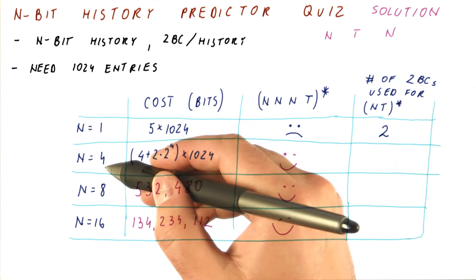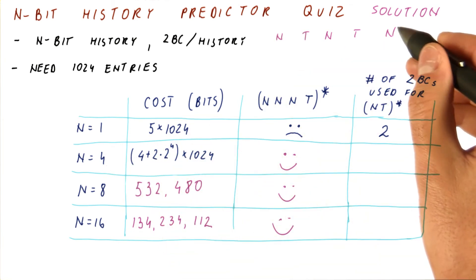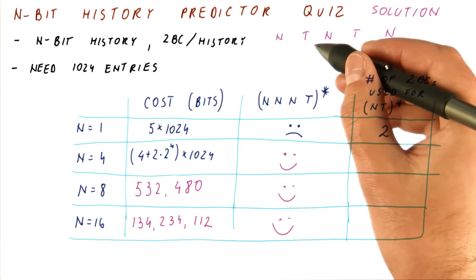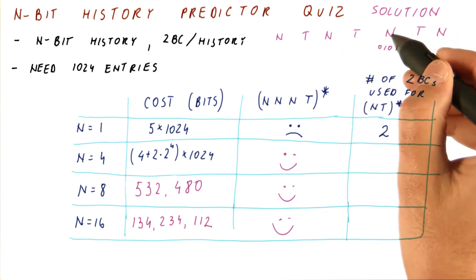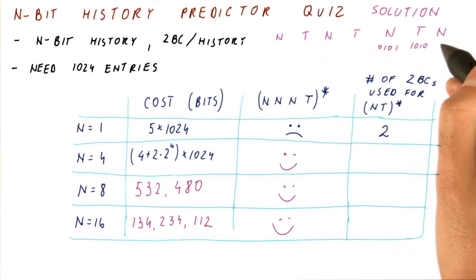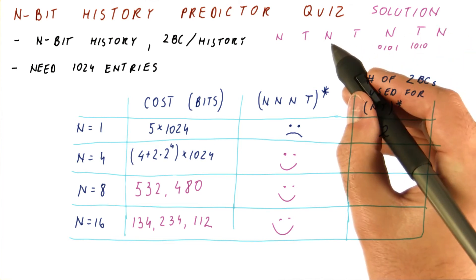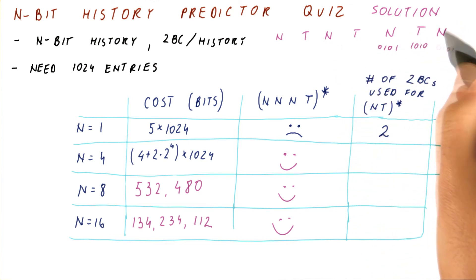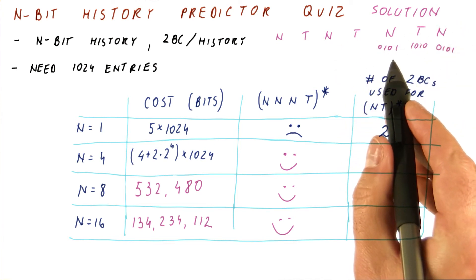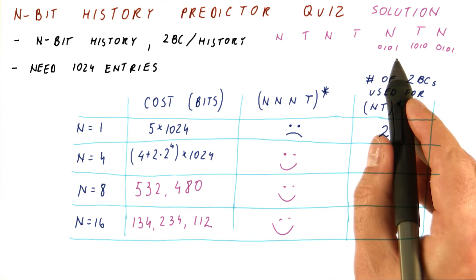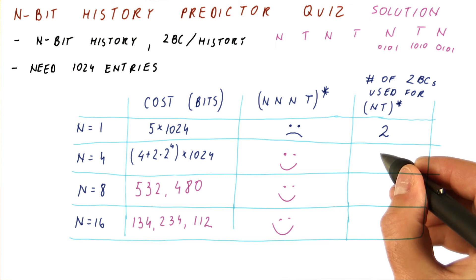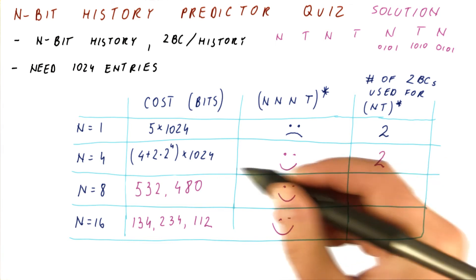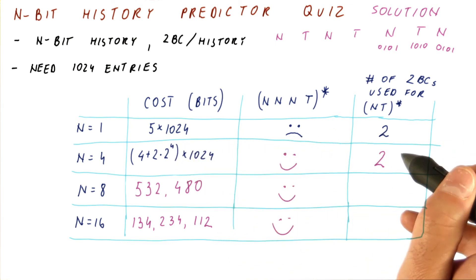When we have n equals four and are trying to predict the not-taken branch, our history is 0,1,0,1. When we're trying to predict the taken branch, the history will be 1,0,1,0. When we're trying to predict the next not-taken branch, the history again will be 0,1,0,1. So really, we will only be using entries 0101 and 1010 — that means only two of the 16 two-bit counters.